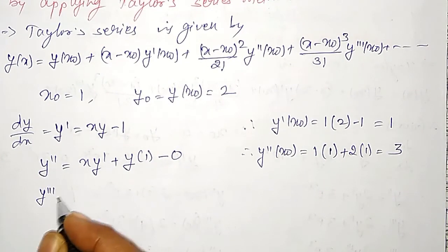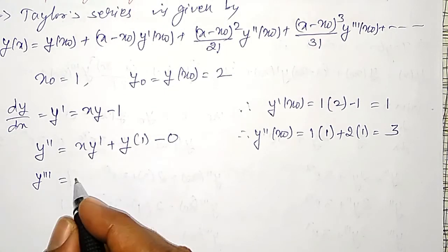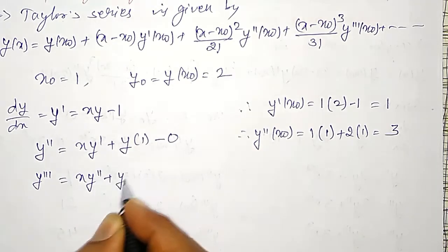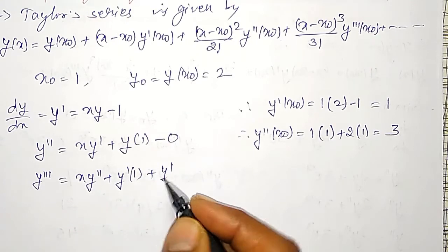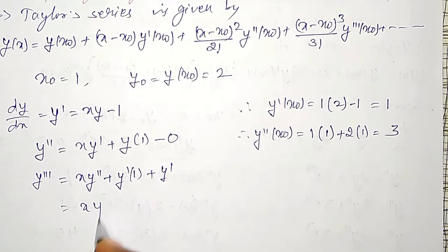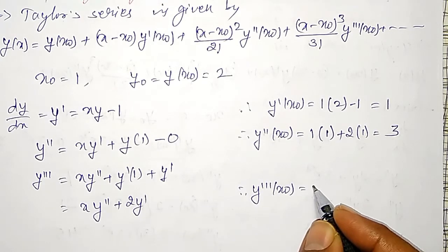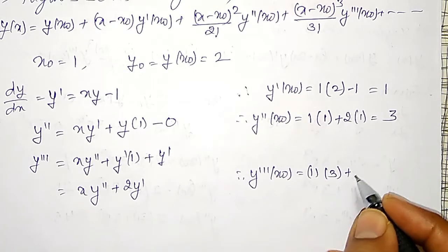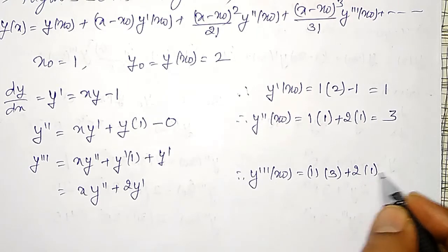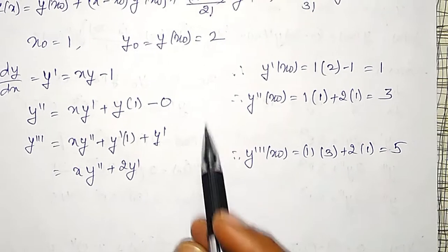y triple dash: differentiate again. Since y' is also a function of x, apply the product rule again: y''' = x·y'' + y'·1 + y' = x·y'' + 2y'. Therefore y'''(x₀) = 1·3 + 2·1 = 5. Using values 1, 3 and 5 in the Taylor series, I am going to get the solution.